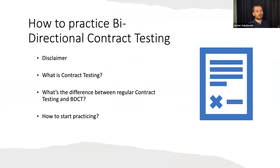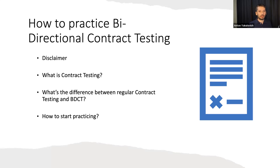First, a disclaimer: I'm not affiliated with PactFlow company, so I'm presenting just my humble opinion. Today I'll cover briefly what contract testing is, just to make common ground, and then we will switch to bidirectional contract testing and why I think this is a really good tool for the current state of tools and for the future. Then I'll show how you can practice this using open source tools, GitHub, Docker, and so on.